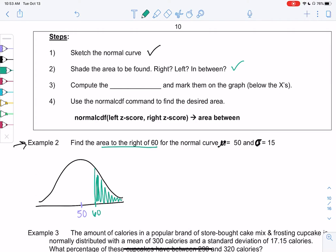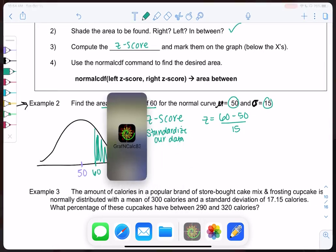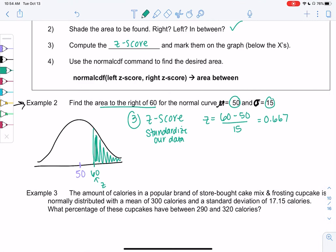And then we're going to compute the z-score. So we can't use normal CDF yet because it's not standardized. So we're going to compute the z-score and mark them on the graph. So let's find the z-score. This is standardizing our data. So we'll say z is 60 minus 50 all over 15. And I got 0.6667. So I just write myself a little note. z is 0.6667. So if we went to that normal curve instead at the standard normal, it would be 0.667, so a little bit before one.